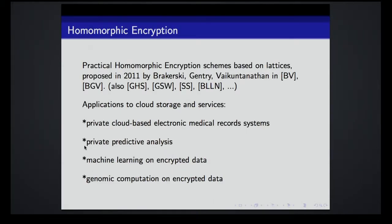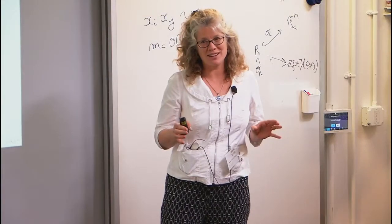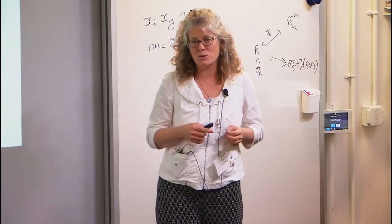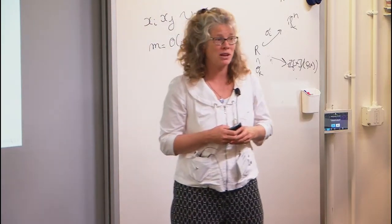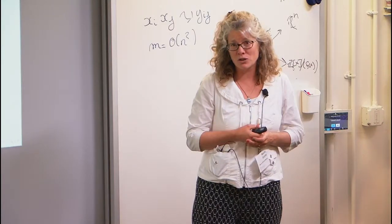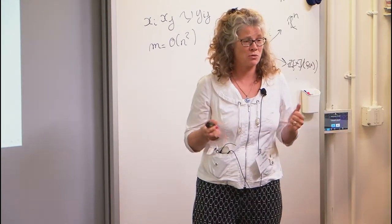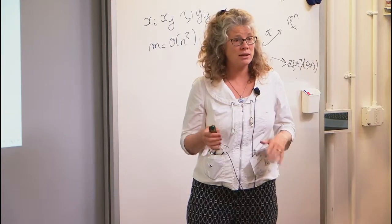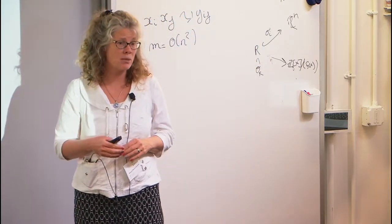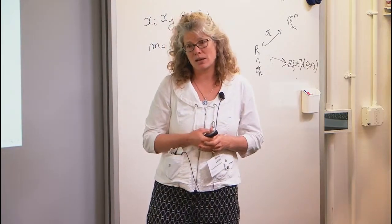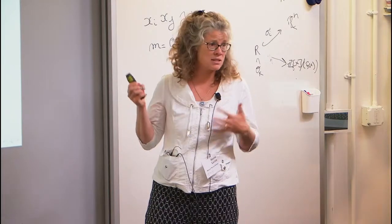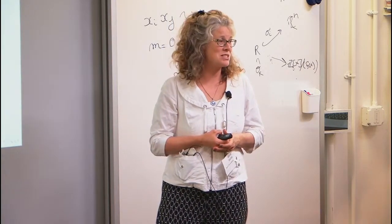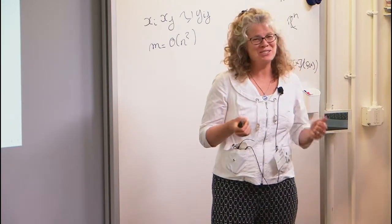This sounds like a pretty bold title — attacks on Ring LWE. Most of you know that in recent years I've largely been working on practical applications of homomorphic encryption. One takeaway right from the beginning: the attacks I'm going to tell you about today do not threaten homomorphic encryption schemes based on cyclotomic fields where you take two-power cyclotomics. As far as we know, unless these attacks are extended in some way, they do not undercut current implementations and applications of practical homomorphic encryption — which is good news from my point of view.